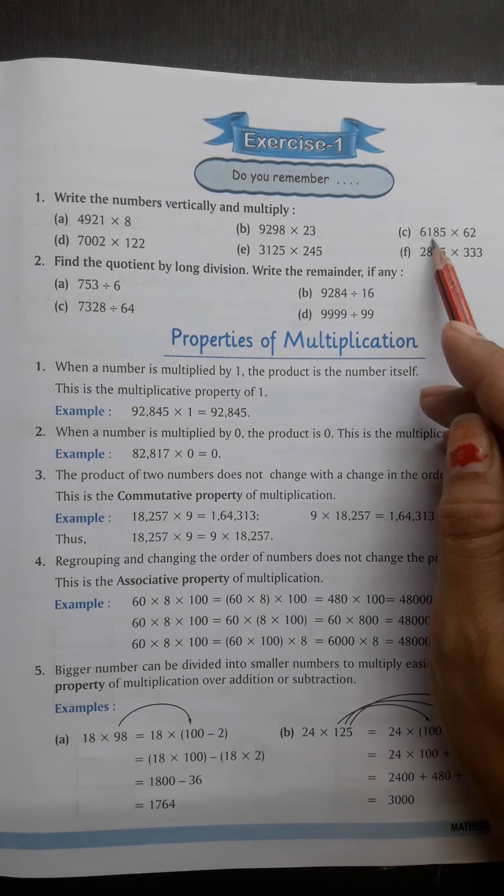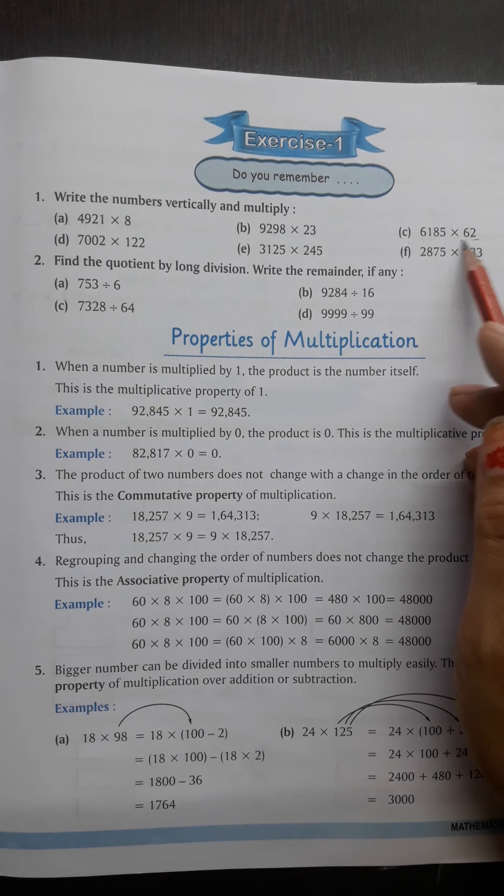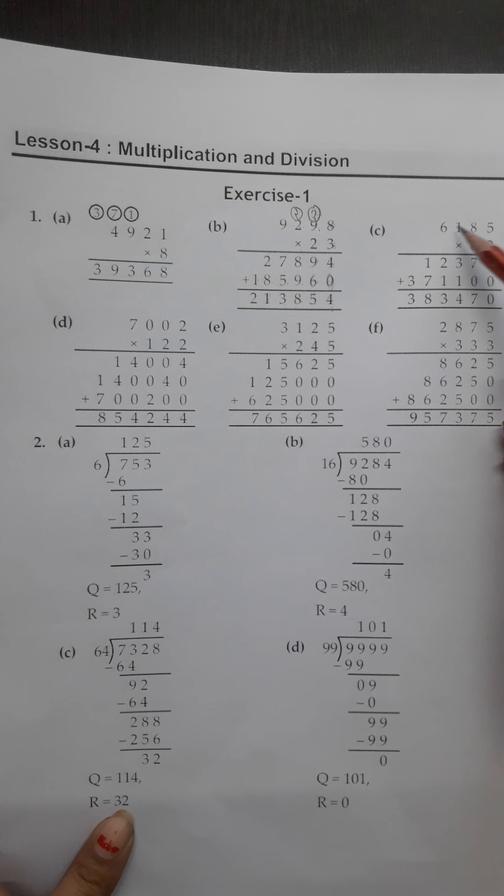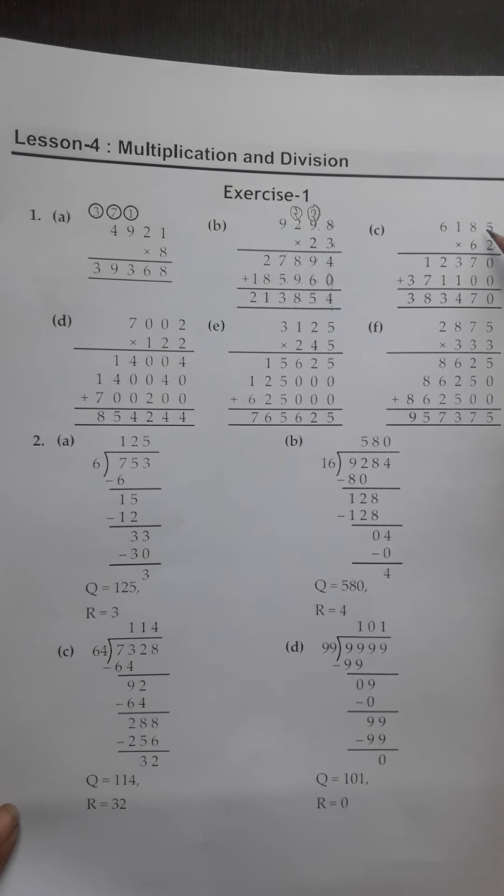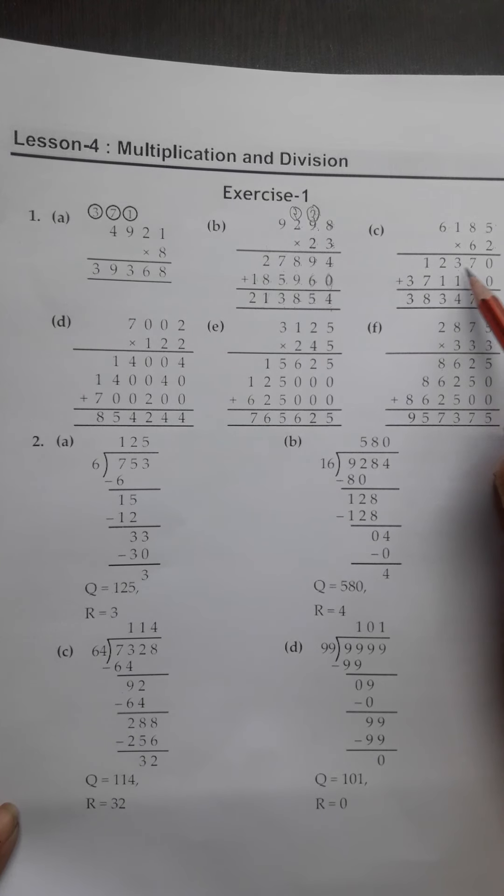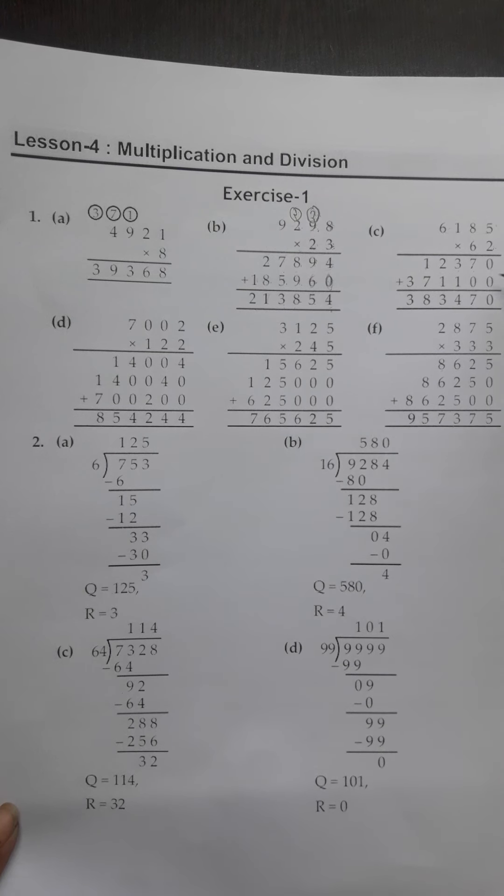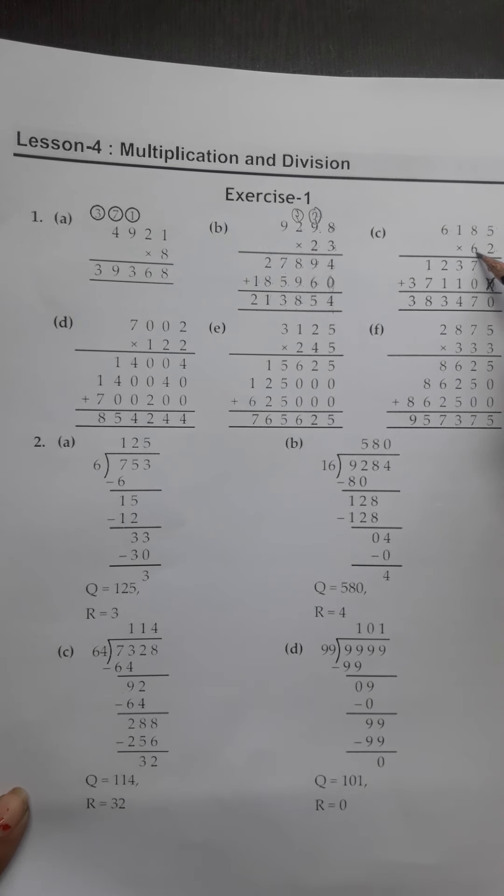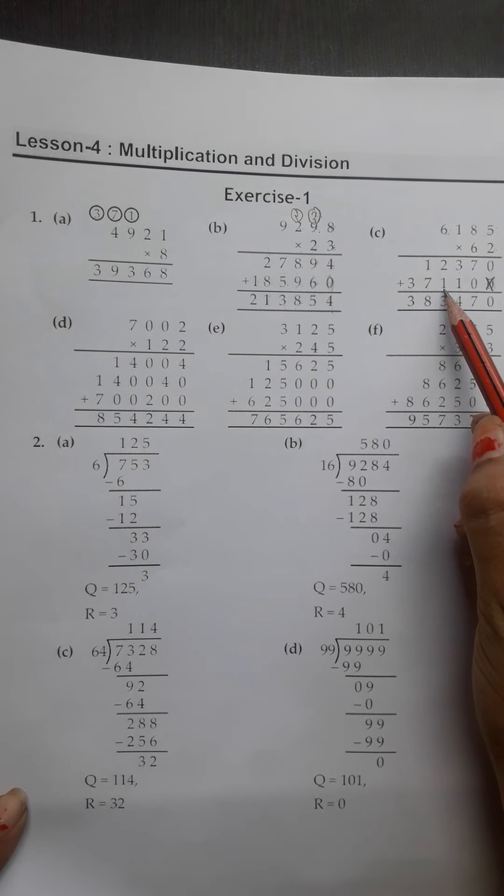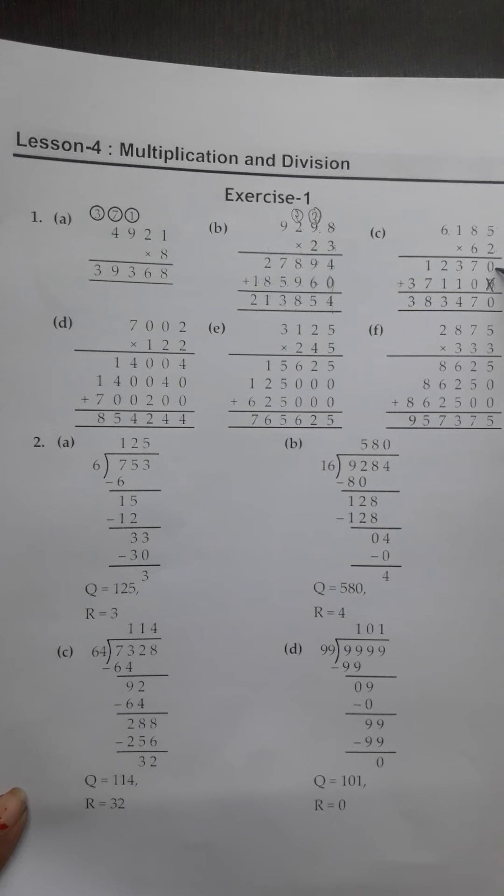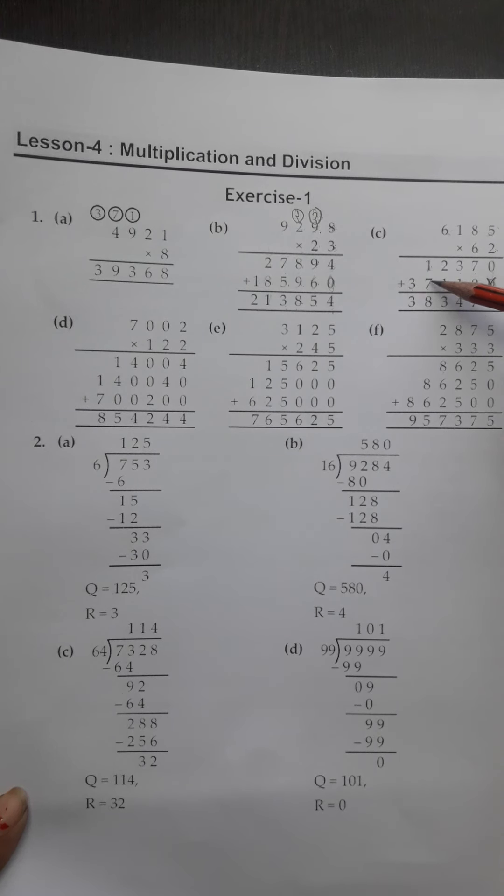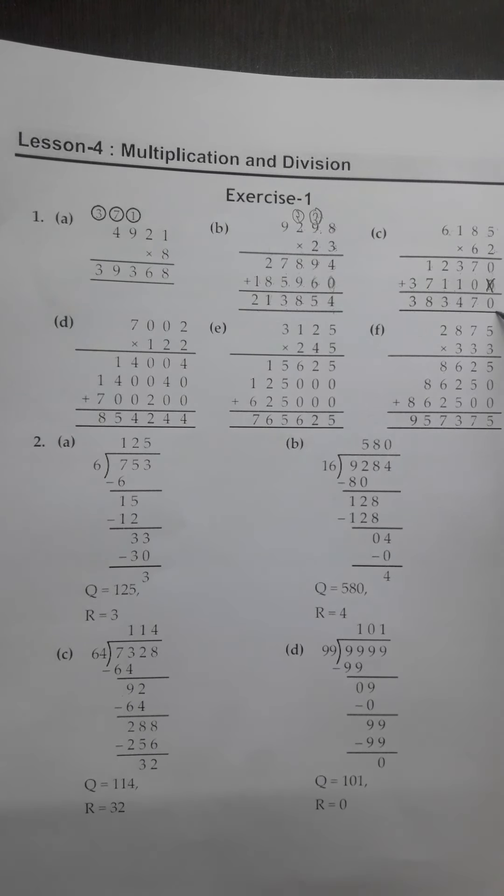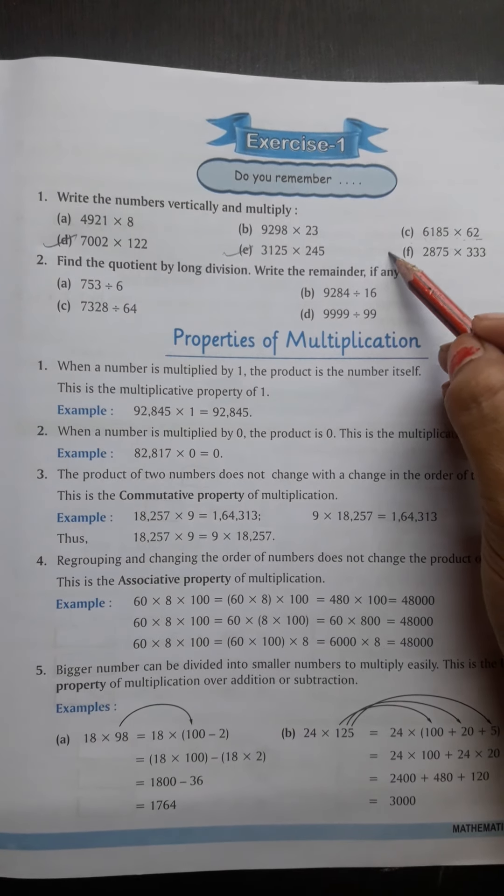C same as 6185 multiply 62. We arrange them vertically and then multiply. First we multiply by 2. Our answer is 12,370. Next we write here. 1's place we write 0, then we multiply by 6. Then add all these numbers. Answer is 383,470.